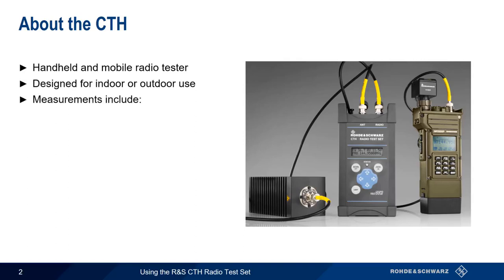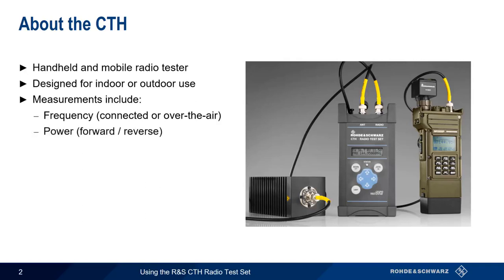The CTH can make a variety of different measurements. These include measurements of transmit frequency, either directly connected or over the air, and measurement of both forward and reverse power, including a calculation of the resulting voltage standing wave ratio, or VSWR.